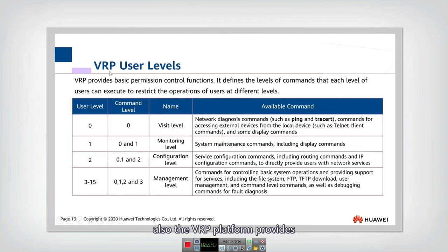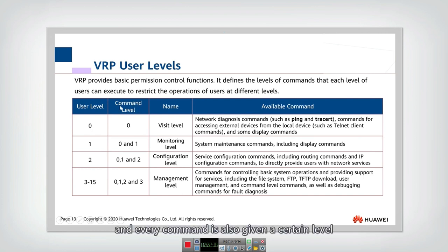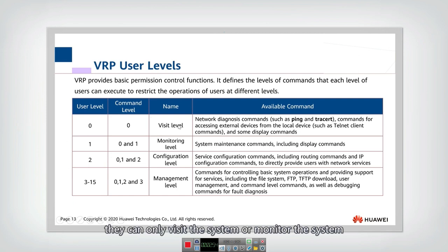The VRP platform provides basic permission control functions. It can control the permissions of users and commands. Every user is given a certain level, and every command is also given a certain level. Higher-level users can execute both low-level and high-level commands, such as management commands. Lower-level users can only view or monitor the system, so their permissions are limited.